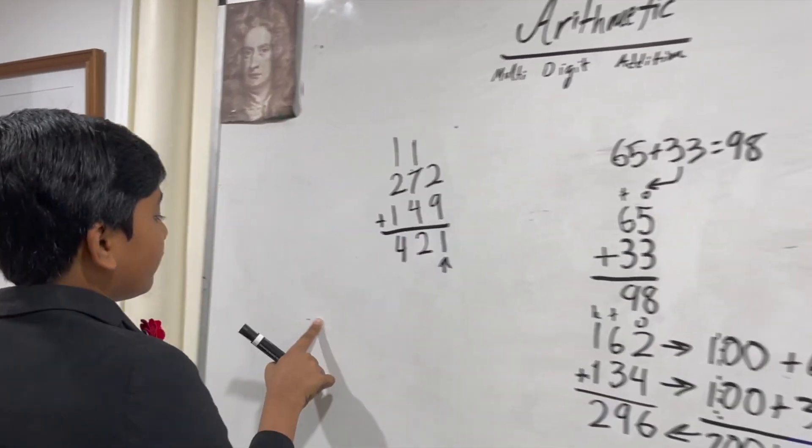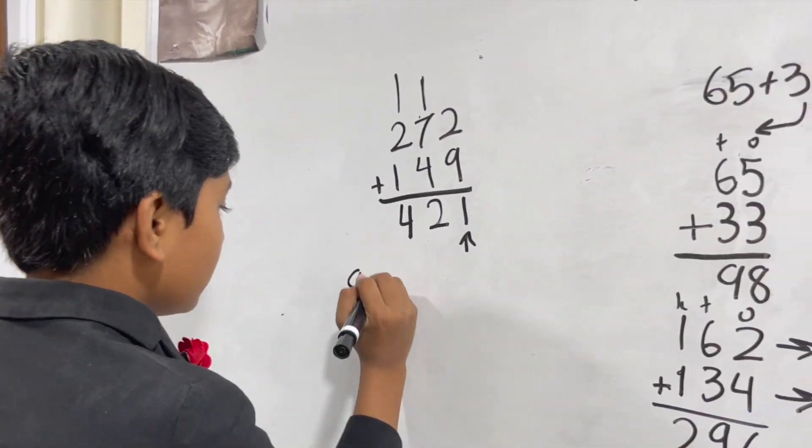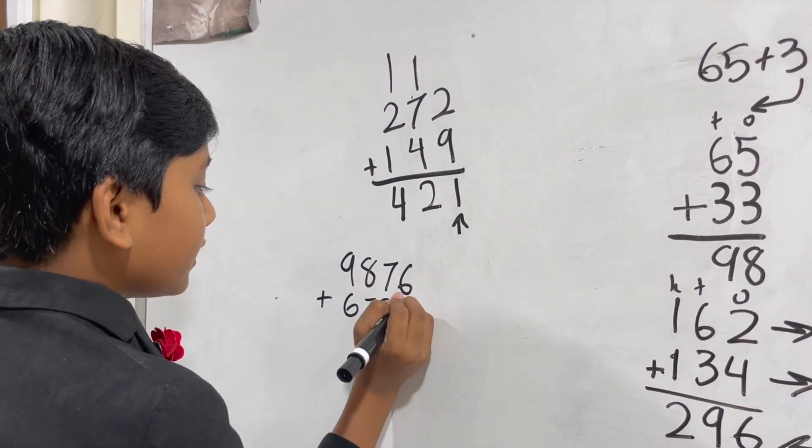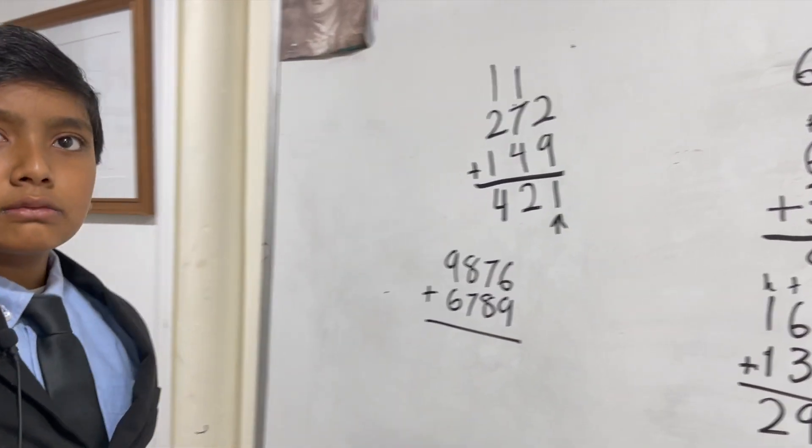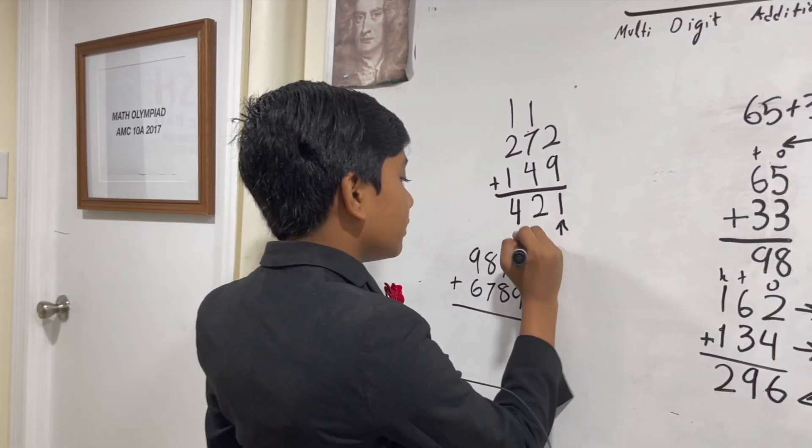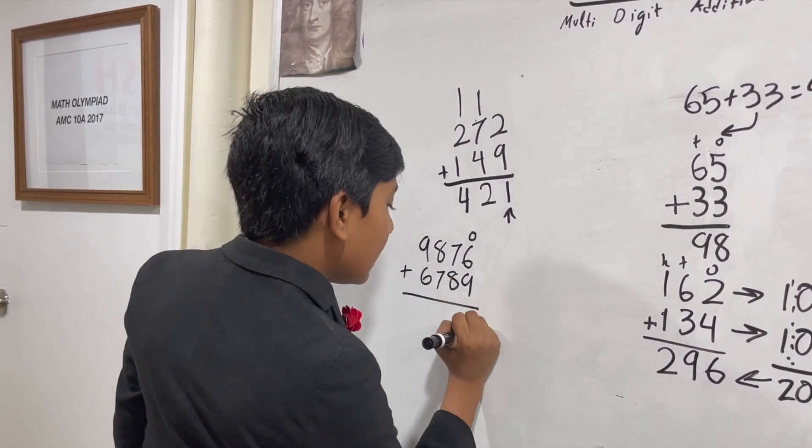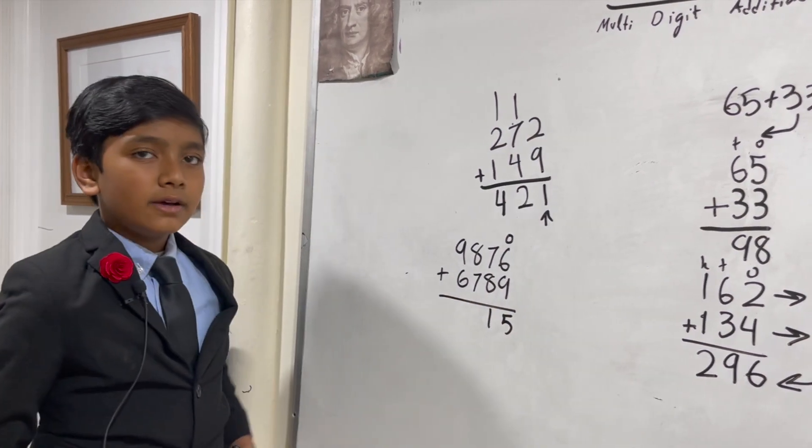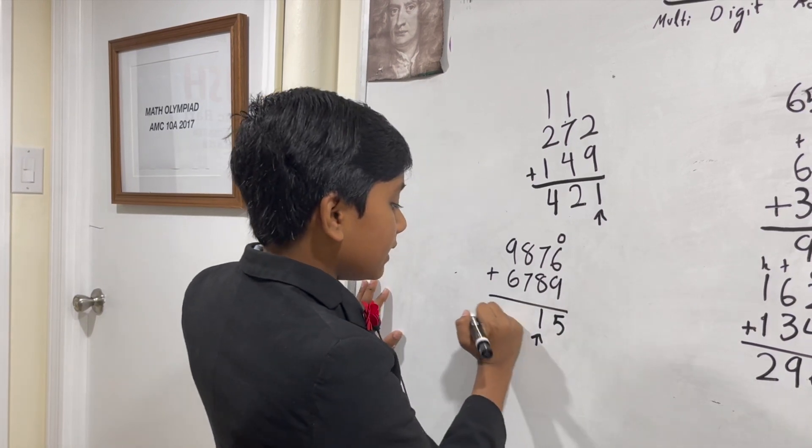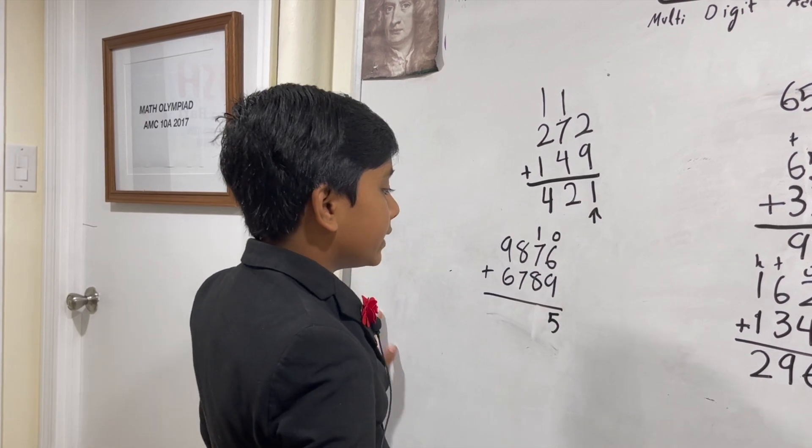Now let's try a final one to make sure you understand it: 9876 plus 6789. Let's go over everything we've learned today. We have the ones place adding up, six plus nine is 15. And remember, since 15 is two digits, we take the second digit and put it up so that it can be added with the others.